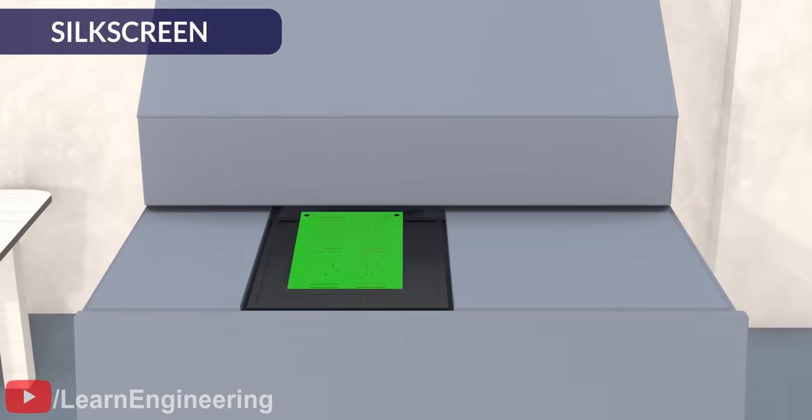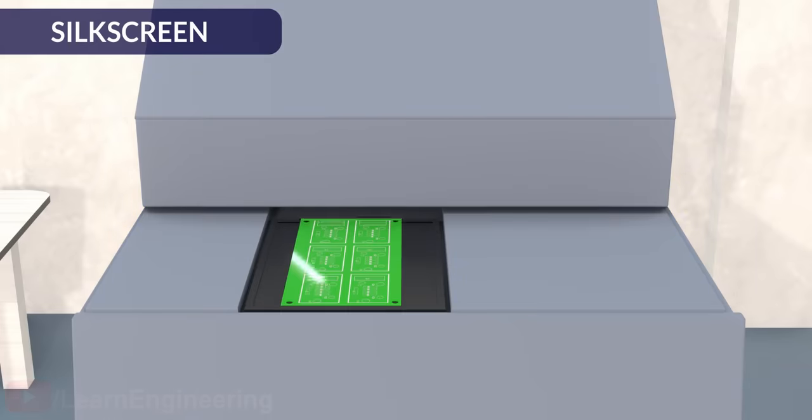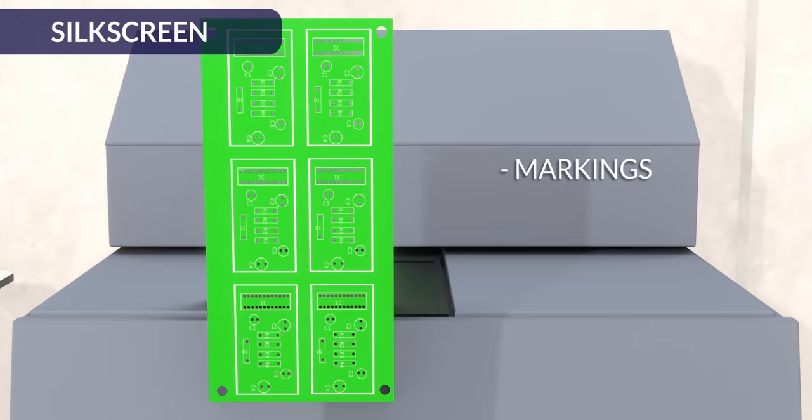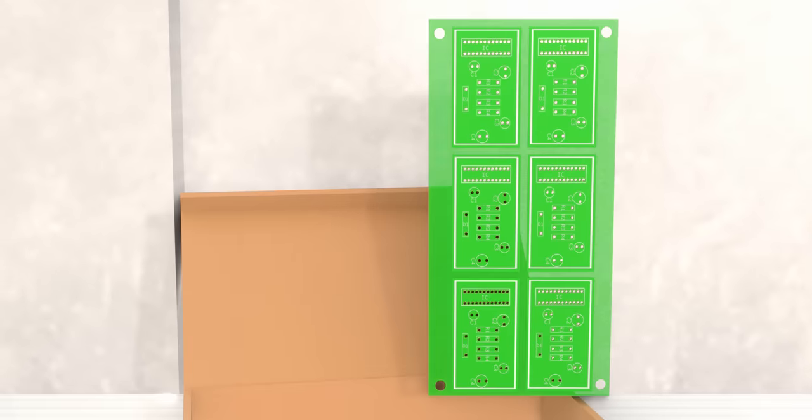As a final step, a silk screen is printed, which is nothing but a layer of visible ink trace used to identify the PCB components, markings, logos, symbols, and so on. We are done! We have manufactured a PCB starting from a simple copper plate. Your PCB is ready to dispatch.